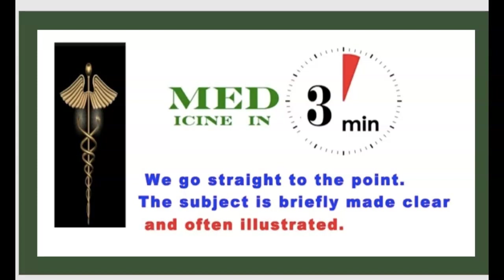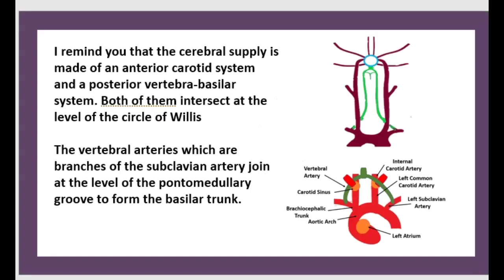Today's topic is about spinal cord blood supply. The cerebral supply is made of an anterior carotid system and a posterior vertebral-basilar system. Both of them intersect at the level of the circle of Willis.